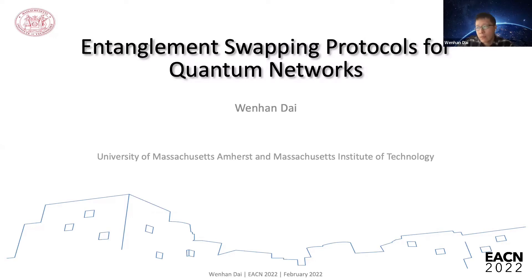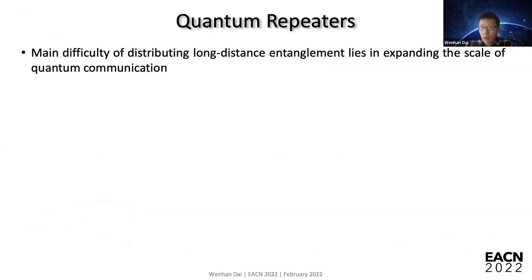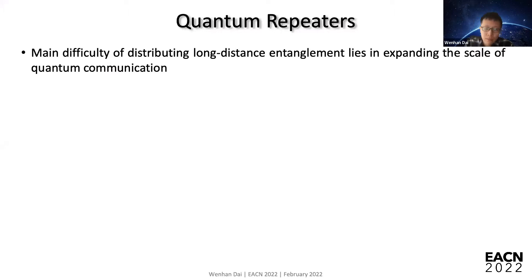The title is 'Entanglement Swapping Protocols for Quantum Networks.' The goal is actually just to distribute entanglement among nodes in this network. As we all know, entanglement is a very important resource in quantum networks, but distributing it between two nodes that are far apart is not so easy.